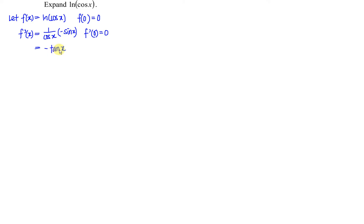If we continue to differentiate this function, we will realize that it results in secant squared, and further differentiation leads to a complicated function involving secant and tangent. So to avoid differentiating a complicated rational function, we use an alternative method. This alternative method is useful when we have a complicated rational function.